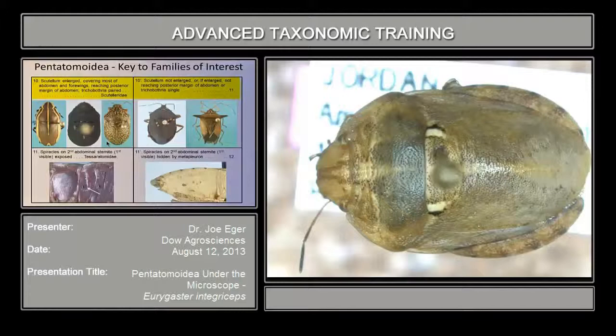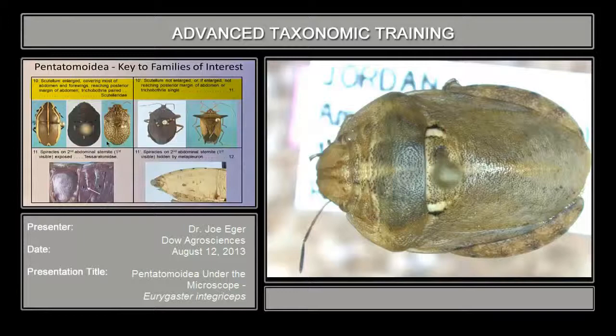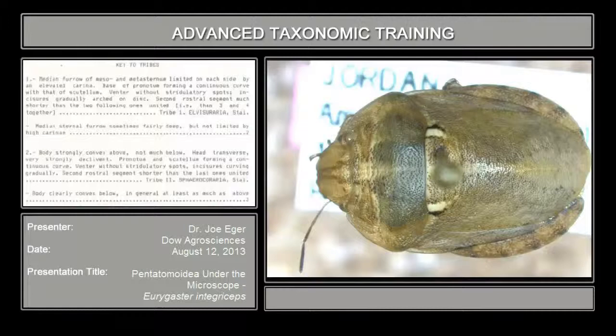Couplet number ten: scutellum enlarged, covering most of abdomen and fore wings and reaching posterior margin of abdomen; trichobothria paired. This one does have an enlarged scutellum. It does reach the posterior margin of the abdomen. And if you look at this one, the trichobothria are paired on this bug. So what you have here is a Scutellarid.